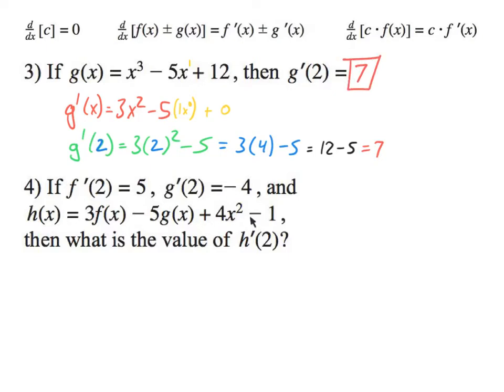This next problem is a little weird, so hang in there with me. If the derivative of f at 2 is 5 and the derivative at 2 of g is -4, and h is this big mess, then what is the slope of h at 2? We need to get the derivative of this, so the derivative of h is h'(x).